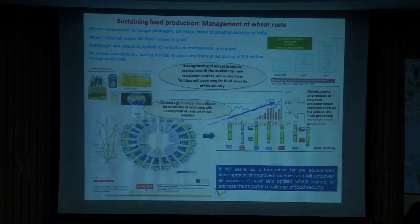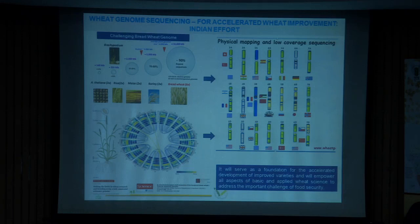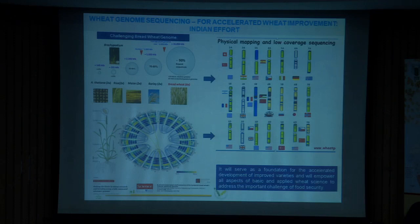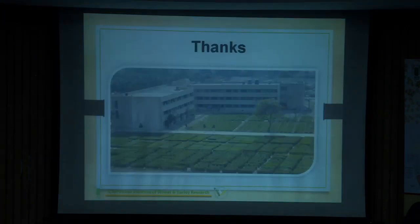The wheat genome sequence is now available. India was a partner in the sequencing — chromosome 2A of the wheat genome was sequenced by Indian partners across Delhi University, RCPB, and PAU Ludhiana. With these genomic resources available, we can strive to develop wheats which are more climate-resilient and more targeted for the unpredictable environments we are seeing today. That is all — thank you.